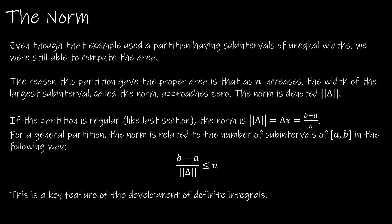So even though our example had subintervals of unequal widths, we're still able to compute the area. And the key reason for that is that as n increases, so as n approaches infinity, the width of the largest subinterval, called the norm, which is here, the norm approaches 0. So as n is increasing, the width of the subinterval is approaching 0.